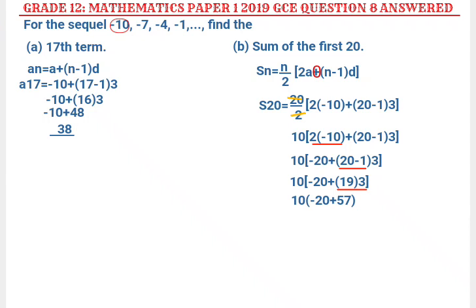Negative 20 plus 57 gives us 37. Then I multiply 10 by 37, which gives me 370. So the sum of the first 20 terms in that sequence is 370.